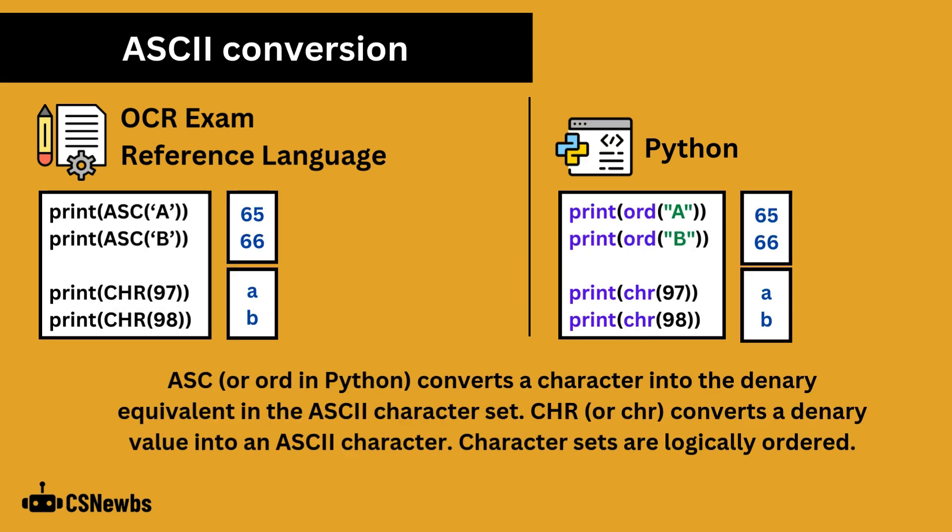ASC or ord in Python converts a character into the denary equivalent in the ASCII character set. CHR converts the denary value into an ASCII character.